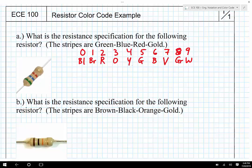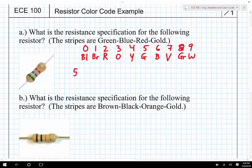So when I look at the color stripes here, green, blue, red, gold, well green and blue, because there are four stripes, green and blue will be the digits of the coefficient. So green is five, so I've got five, and then blue is going to be six, so there's 5, 6.